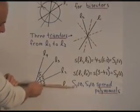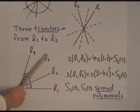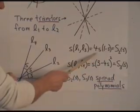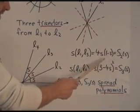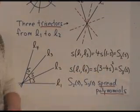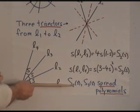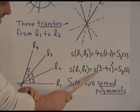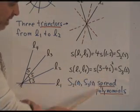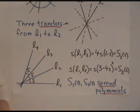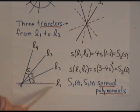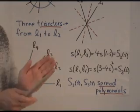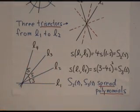Then we know that the spread between L1 and L3 is given by this expression, 4 times S times 1 minus S. That's the second spread polynomial. While the relationship between L1 and L4 is given by S times 3 minus 4S all squared. So here, that's the third spread polynomial. These two are crucial in discussing the questions of trisection or bisection of lines.